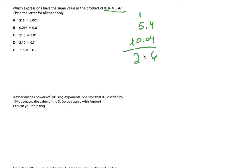Now I just have to count the digits to the right of the decimal place in both factors. I've got 1, 2, 3 — so I come down to my answer and move the decimal 3 places. My answer is 2,160 — or 216 thousandths.